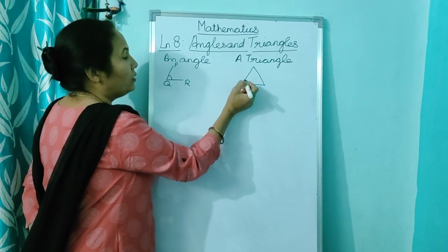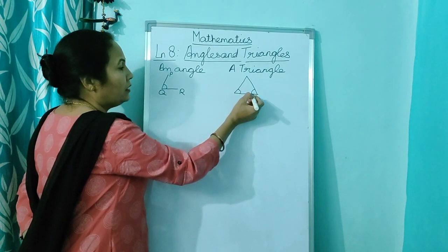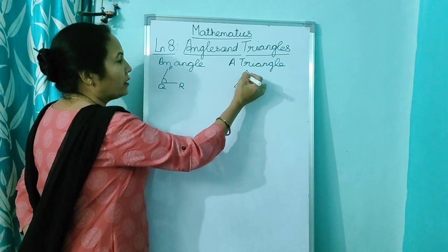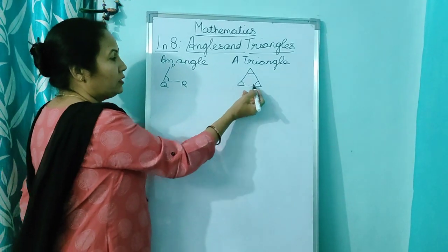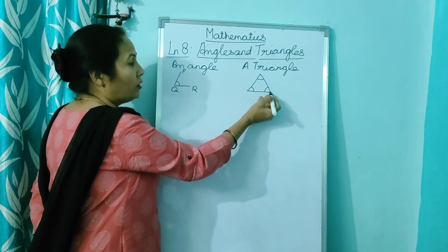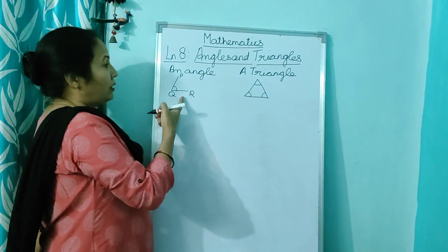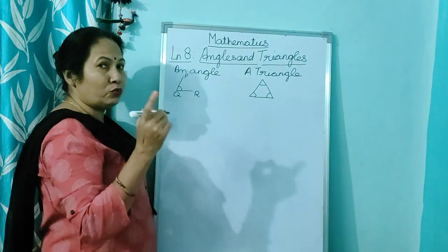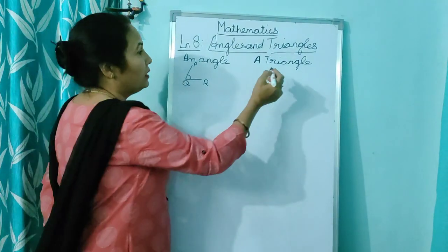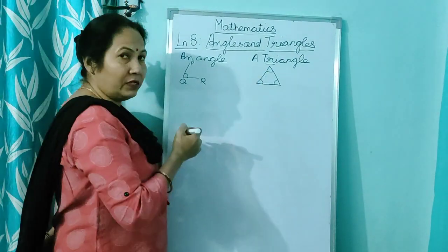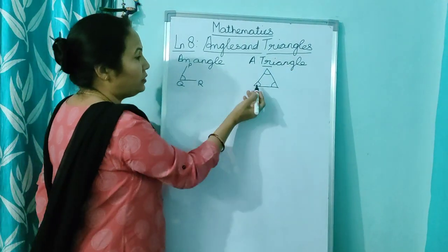Now you have a vertex in the triangle also, and this is a corner of the triangle. Angle has two sides. Triangle has three sides. Tri means three and angle means one, two, three.